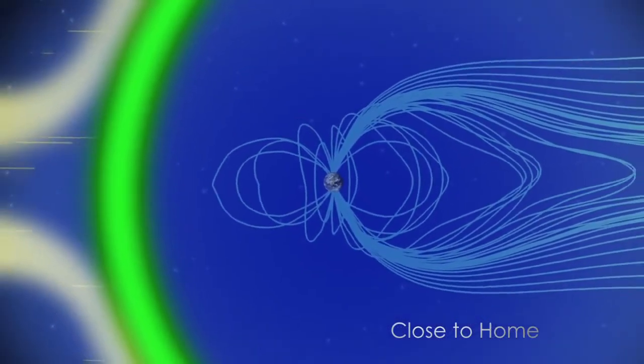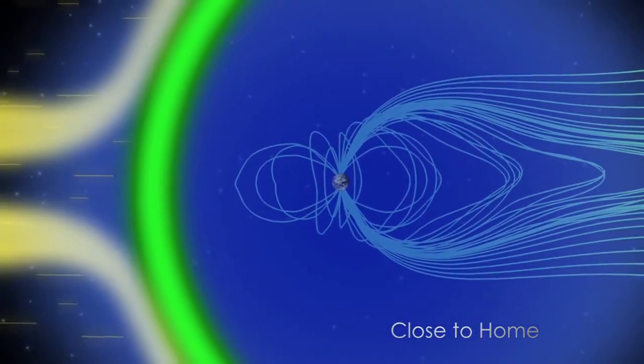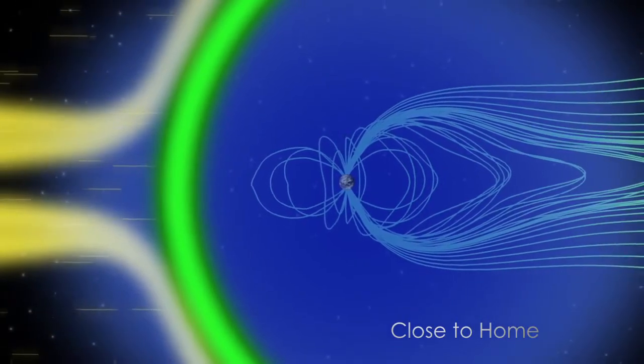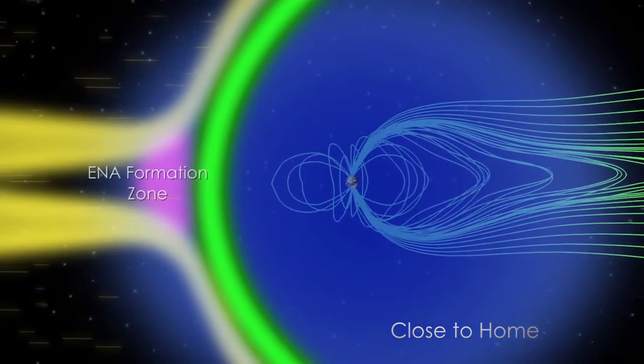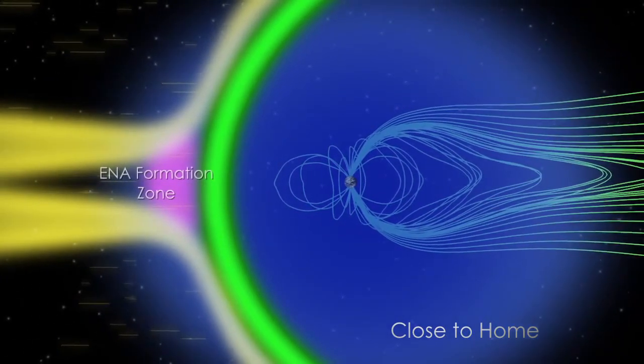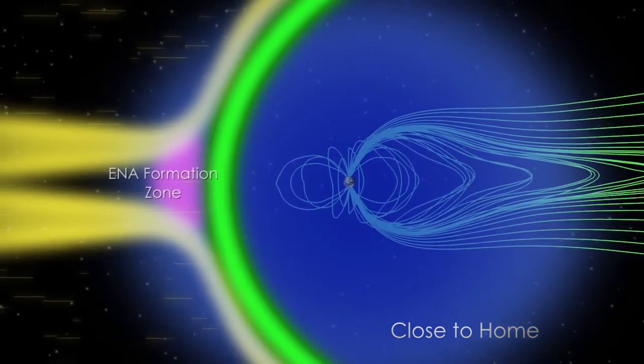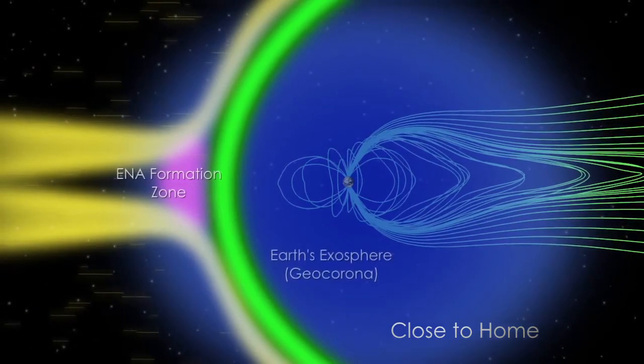Because IBEX is orbiting Earth, it also can observe the creation of energetic neutral atoms along the nose of Earth's magnetosphere. ENAs are created there as solar wind protons take electrons from hydrogen atoms in the outermost vestiges of our atmosphere, known as the exosphere.